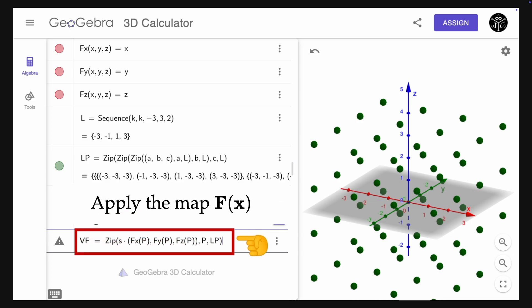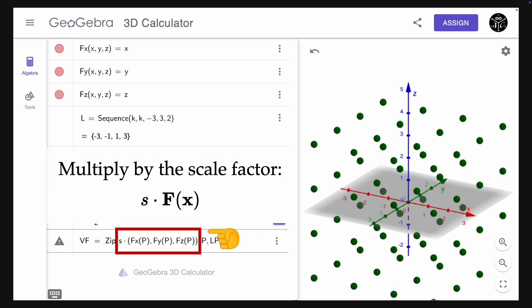Finally, we define the vector field as a list BF using the command zip. Here's where we apply the map F. Each component is evaluated at the point P, where P belongs to the list LP previously defined. We also multiply here by the scale factor and hit enter.